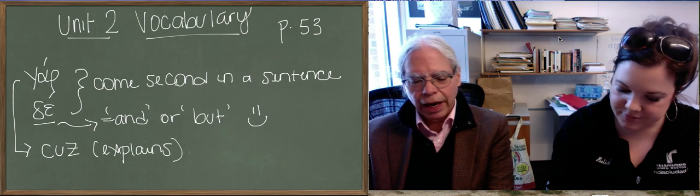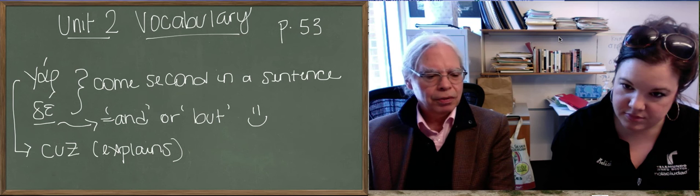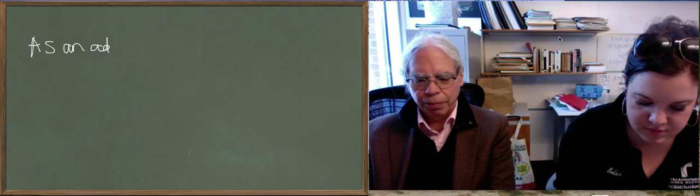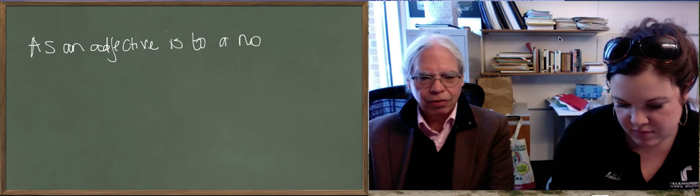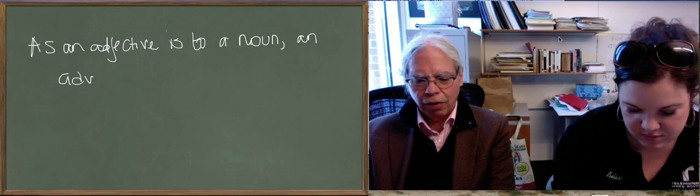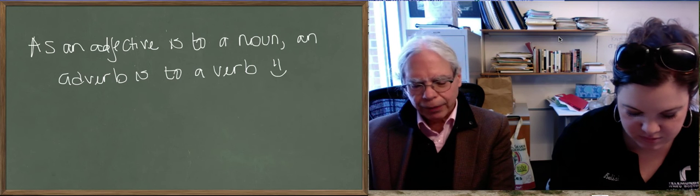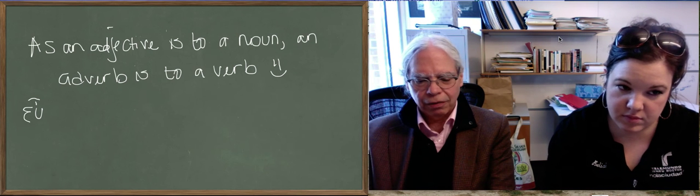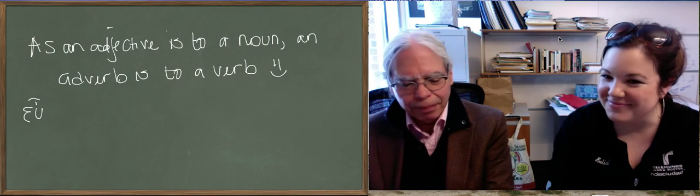The next word is eu, an adverb. An adverb is like, as an adjective is to a noun, so an adverb is to a verb. If an adjective for a noun is like the big house, big is an adjective. For a verb, you can say, I went slowly. So slowly explains or limits or qualifies something about the verbal notion expressed by went. So eu is a very simple adverb. I did something well. I ate well. I jumped well.